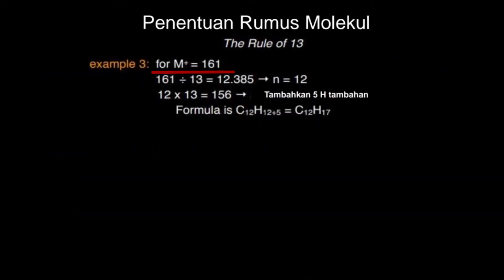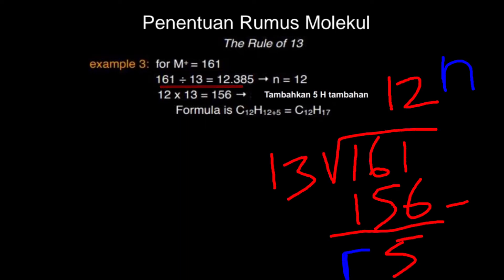Contoh ketiga, massa molekulnya adalah 161. 161 dibagi 13, hasilnya 12, berarti C-nya itu 12. Sisa hasil bagi dengan 12 kali 13 adalah 5, berarti hidrogennya itu 12 ditambah 5 sama dengan 17. Berarti rumus molekulnya adalah C12H17.